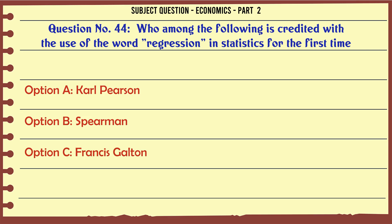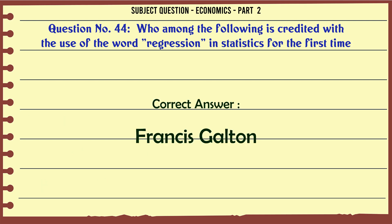Who among the following is credited with the use of the word regression in statistics for the first time? A. Carl Pearson. B. Spearman. C. Francis Galton. D. R.A. Fisher. The correct answer is: Francis Galton.